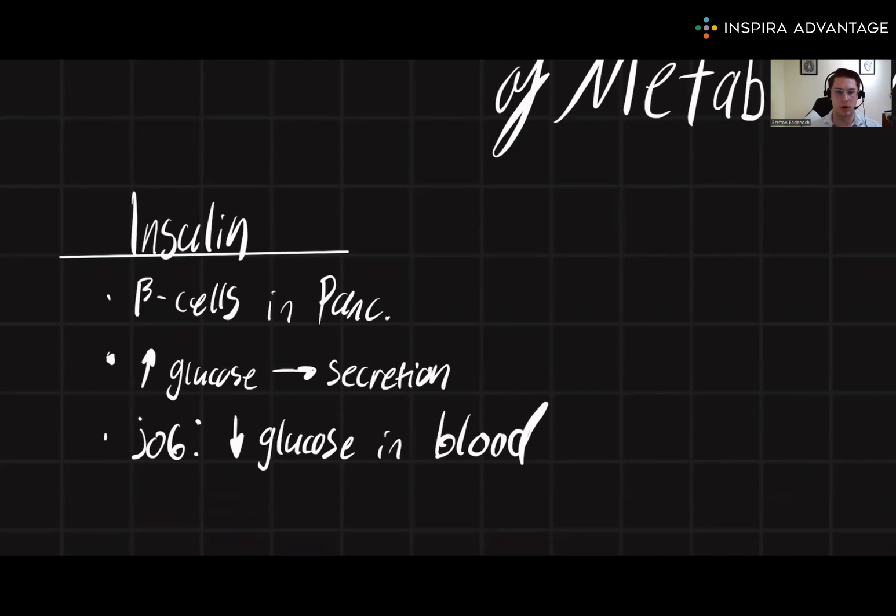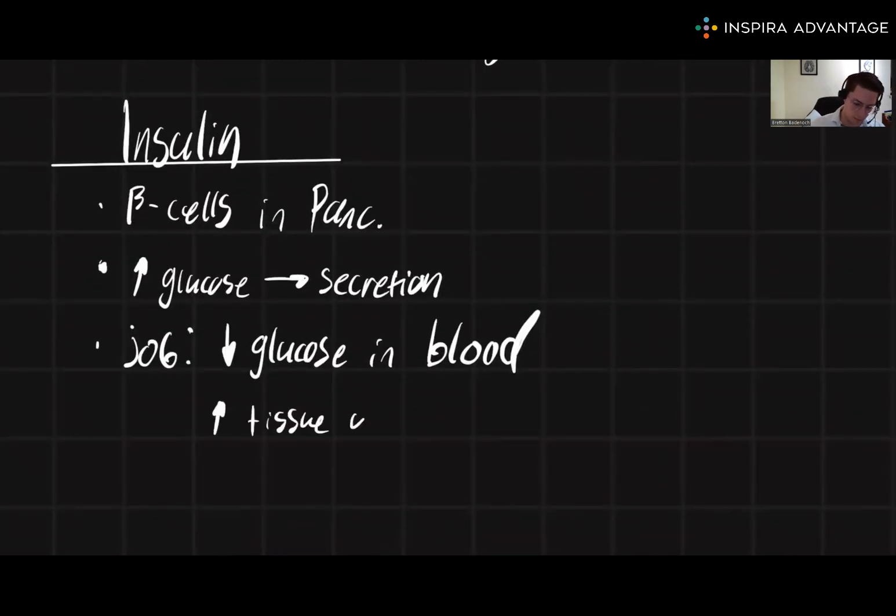One way to decrease blood glucose is to increase the uptake of glucose into different tissues. Insulin helps do this in many different tissues, like muscles, fat, the brain, and many others.